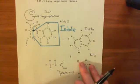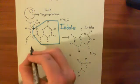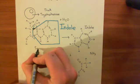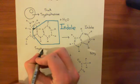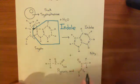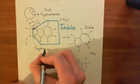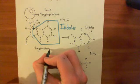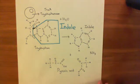The tryptophanase is going to convert the amino acid tryptophan into indole and pyruvic acid and also an ammonia molecule, and all it needs for that is a water molecule.